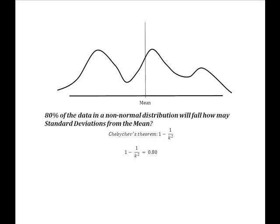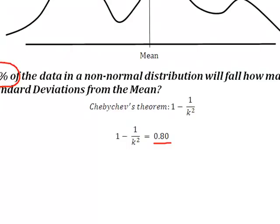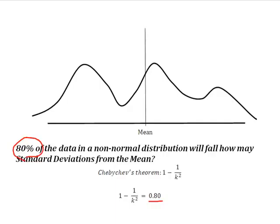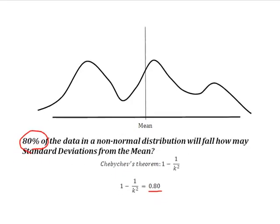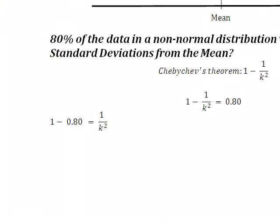Let's see how this math works. Going back to what the theorem says, it basically tells us that the percentage — in this case we want to know where 80% of the data will fall — 80% of the data will fall 1 minus 1 over k squared standard deviations from the mean, where k is the number of standard deviations. So now what this becomes is an algebra problem where I have to solve for k. What I've done is isolated my 1 over k squared on the right-hand side. I moved my 0.80 over by subtracting 0.80 from both sides and adding 1 over k squared to both sides.